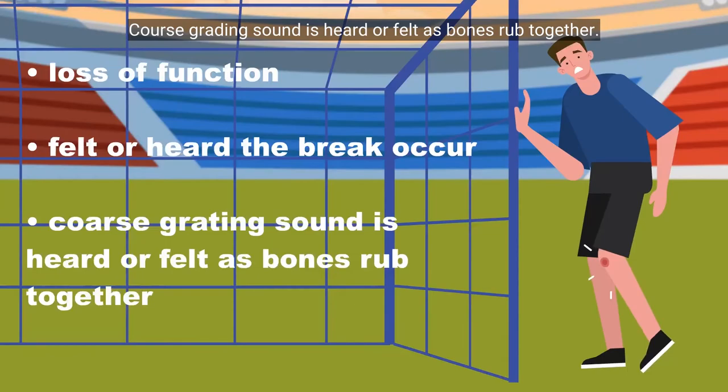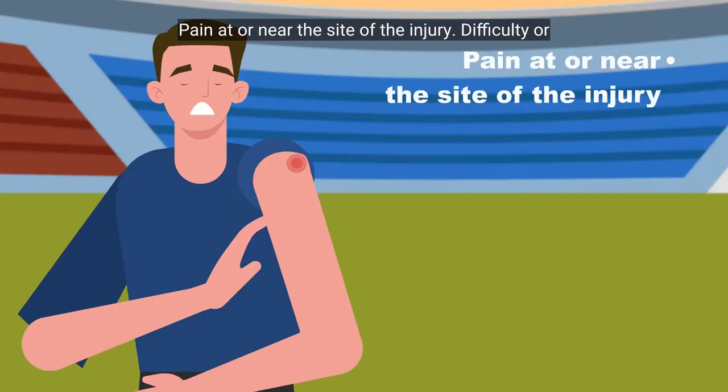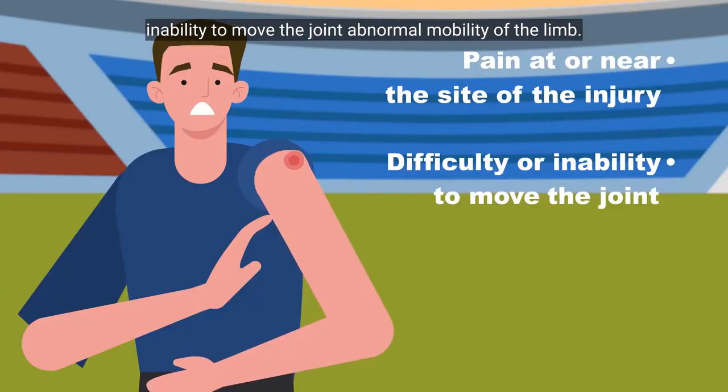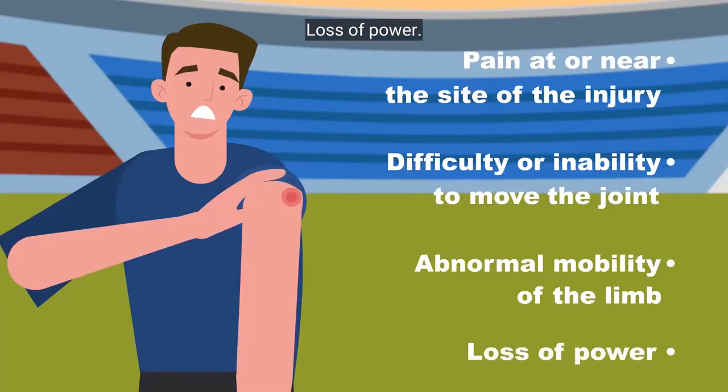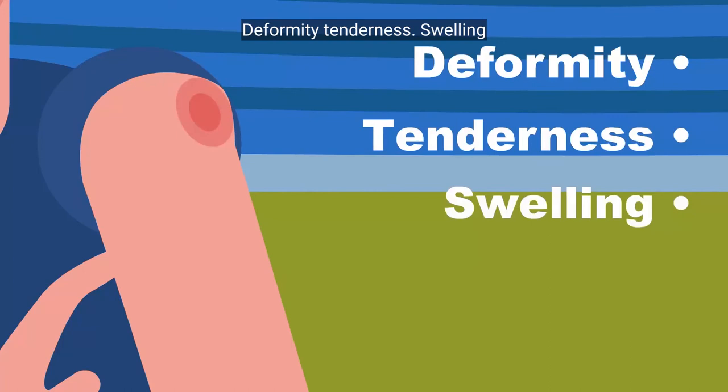Dislocation signs and symptoms: pain at or near the site of the injury, difficulty or inability to move the joint, abnormal mobility of the limb, loss of power, deformity, tenderness, swelling, discoloration and bruising.